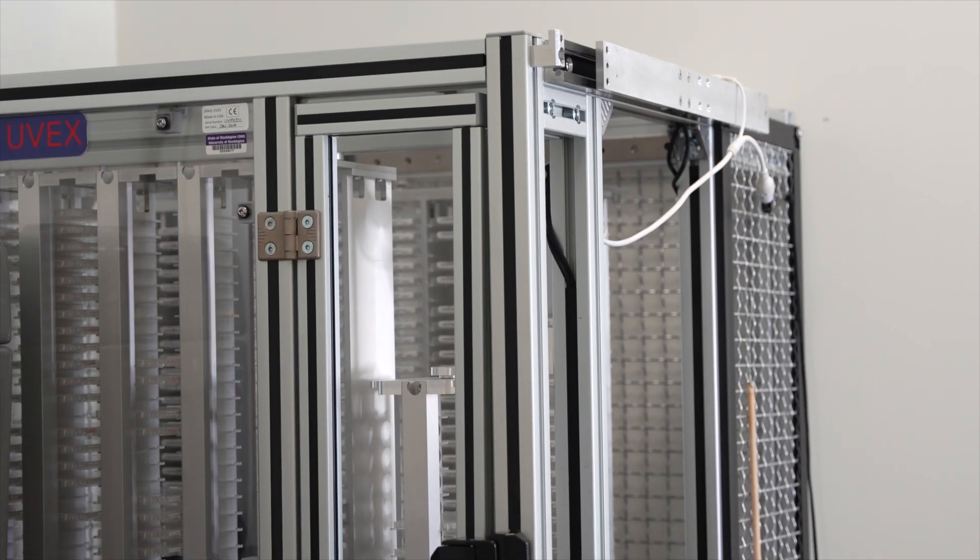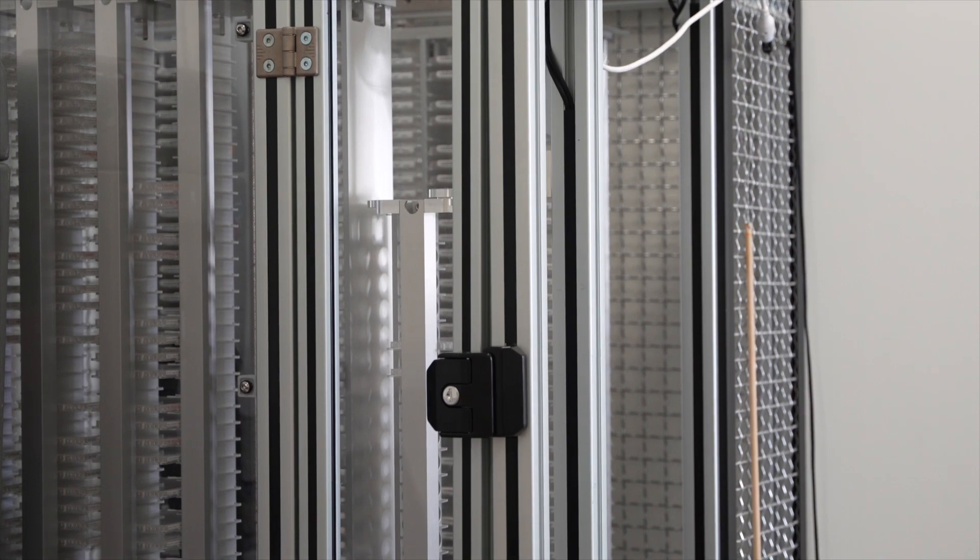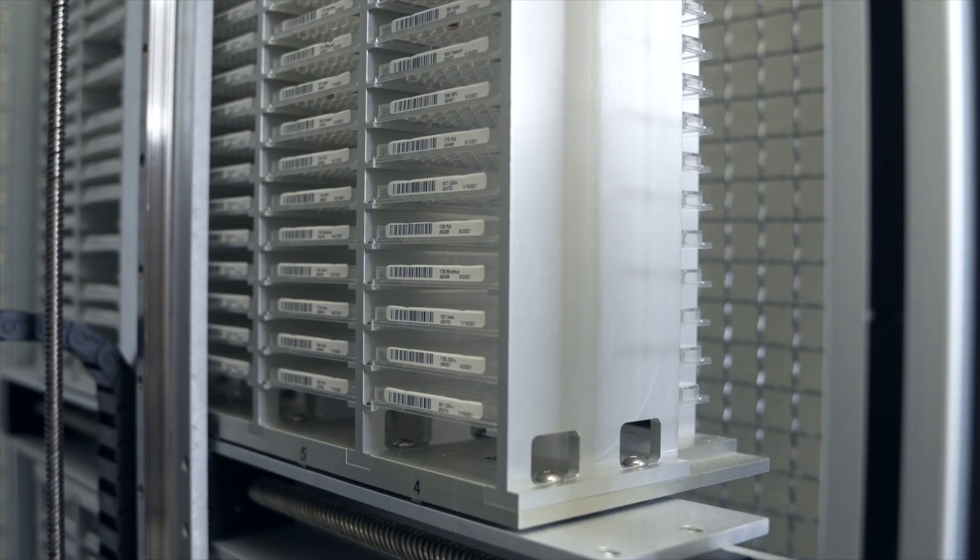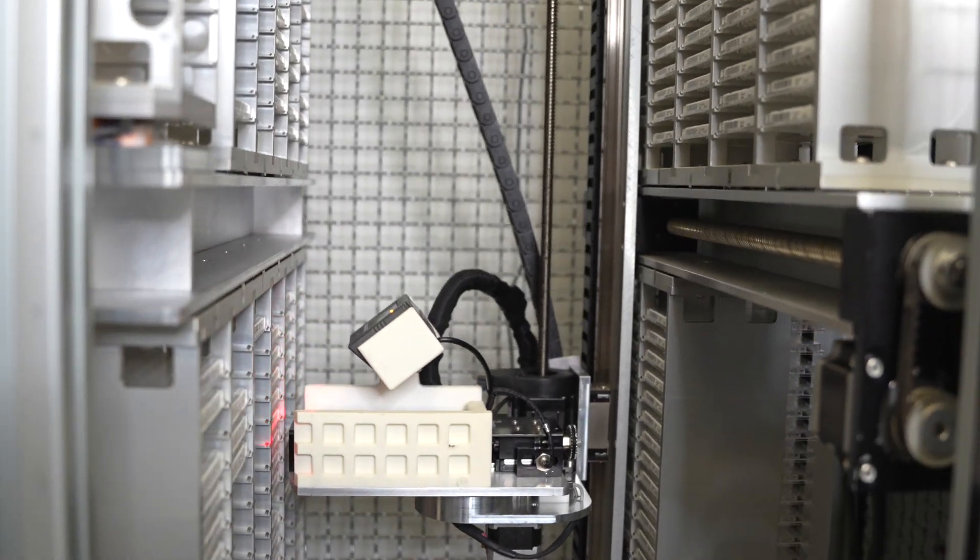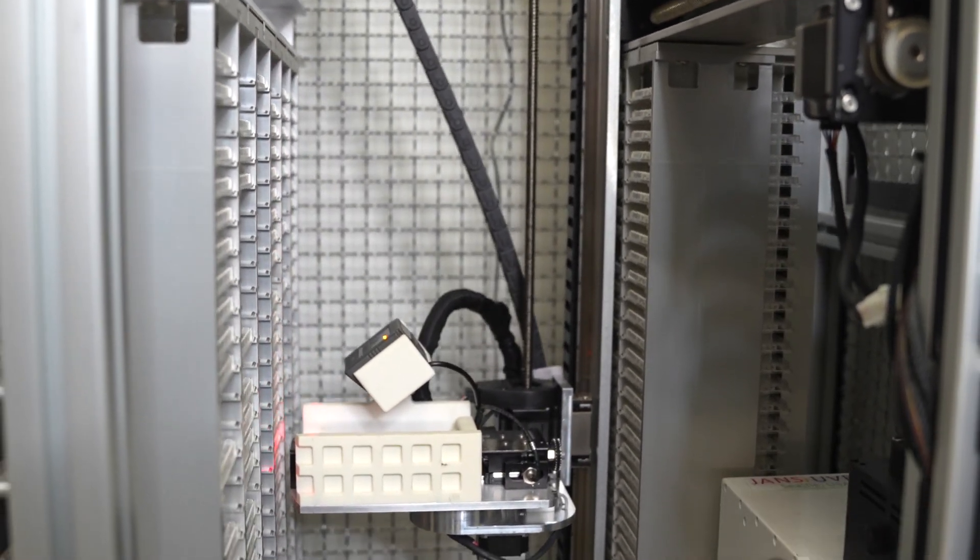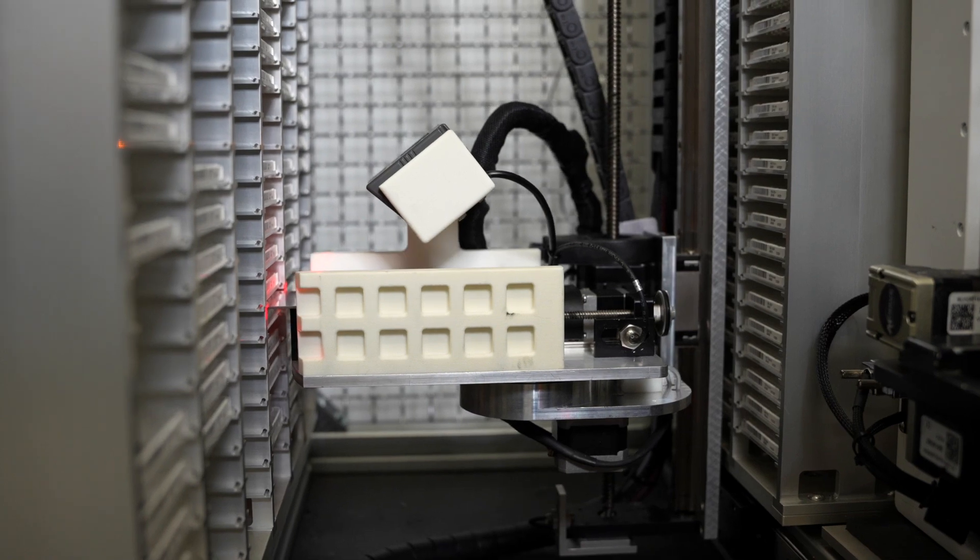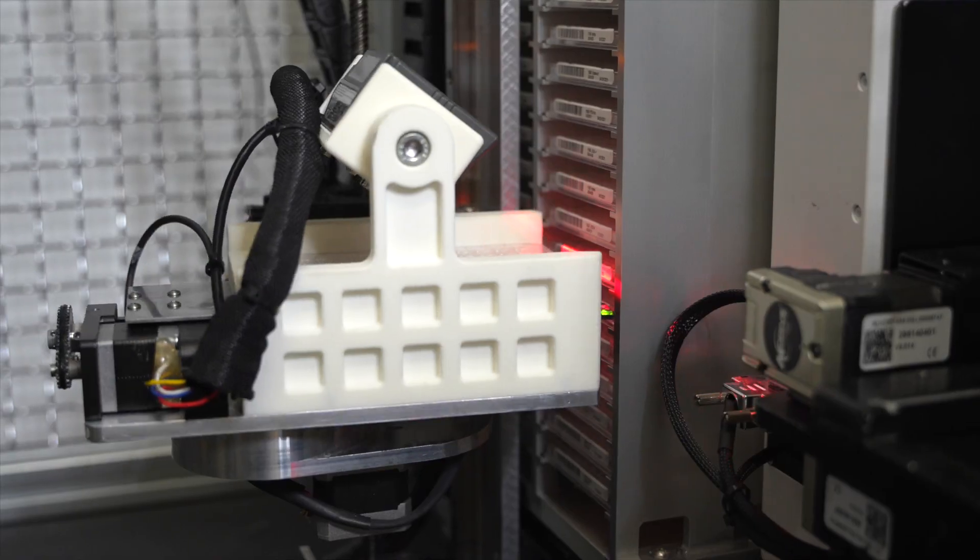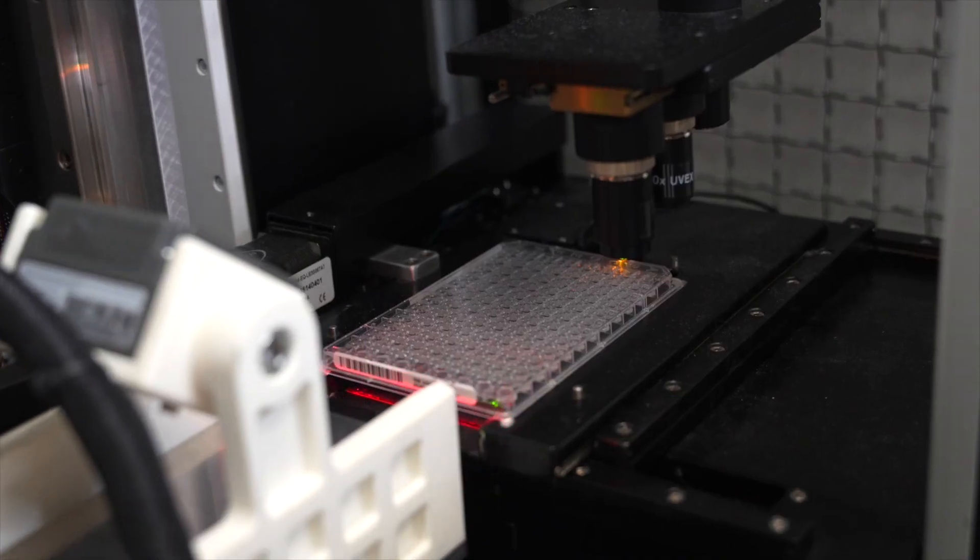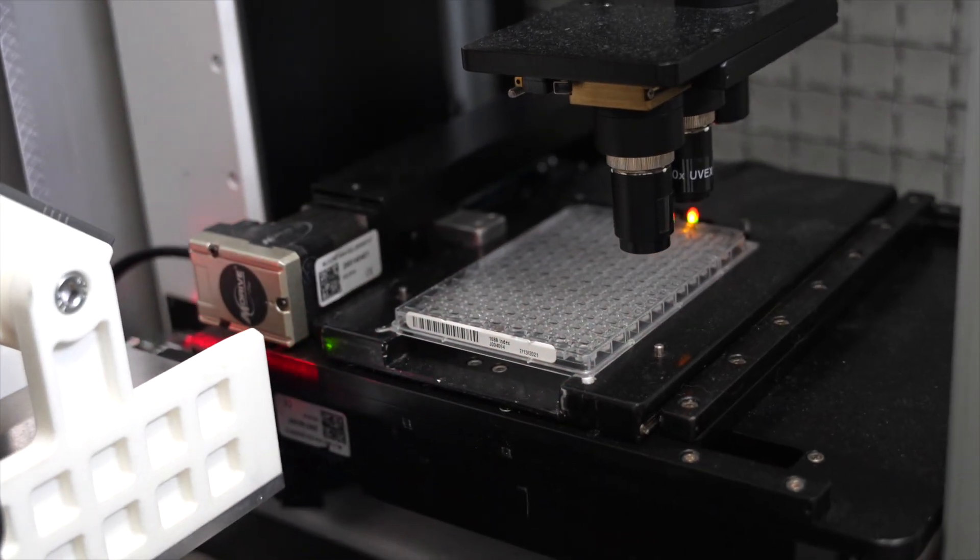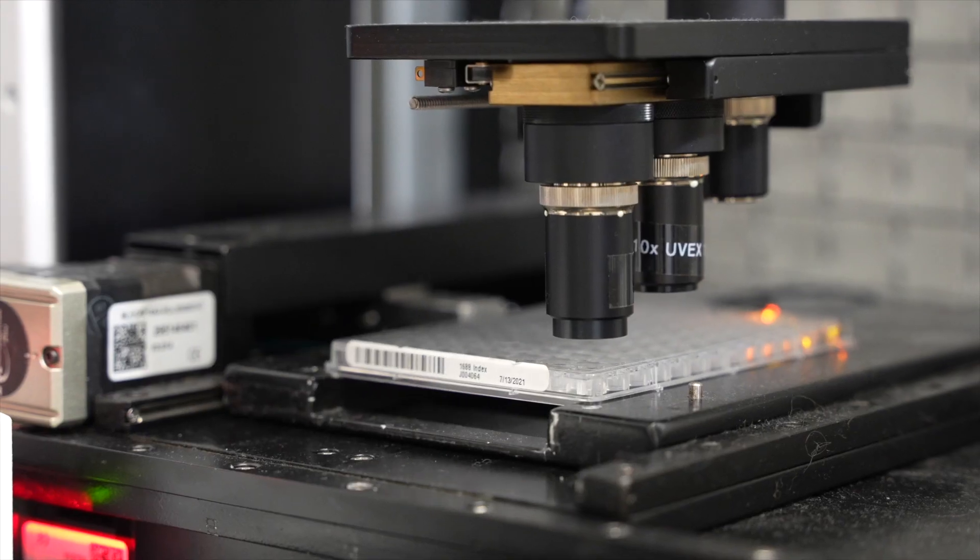We set up a lot of crystallization experiments here at the Institute for Protein Design, and that adds up to a lot of time checking trays for crystals. This robot is a crystal hotel, and it helps us monitor trays automatically. It's hooked up to an imager and a computer, which uses image recognition to detect crystals for us. If we're lucky, we'll find tiny protein crystals. Then we can get them ready to be blasted with some x-rays.